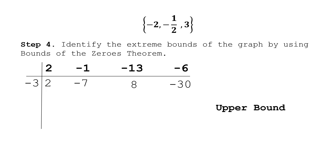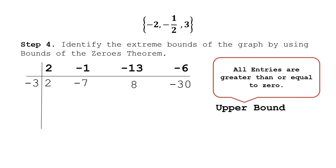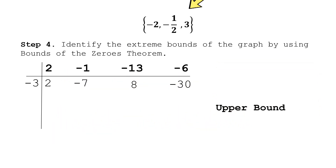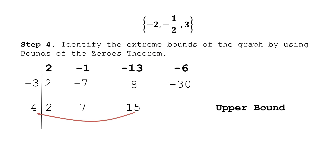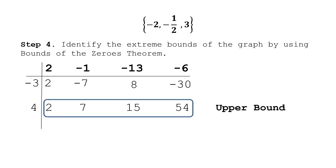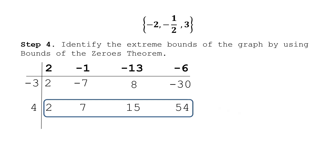For the upper bound, all entries must be greater than or equal to zero. The largest zero integer is positive 3, so we try positive 4. Performing synthetic division with 4: bring down 2; 2×4=8, 8+(−1)=7; 7×4=28, 28+(−13)=15; 15×4=60, 60+(−6)=54. All entries — 2, 7, 15, 60, 54 — are greater than zero, so positive 4 is the upper bound of the zeros.